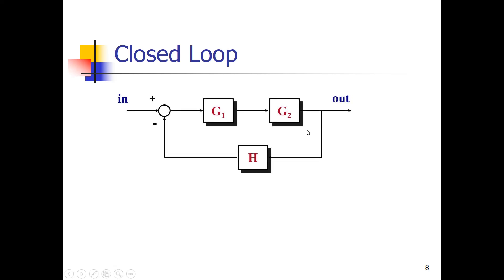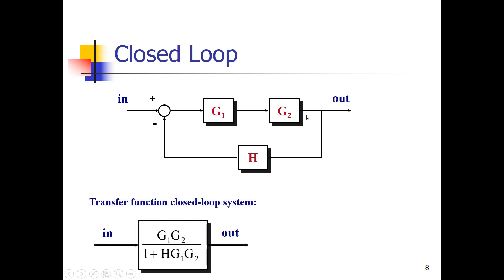Suppose we have this system. The output divided by the input — which we called Y over X in the previous slide — is everything in the forward branch, G1 times G2, divided by 1 plus everything in the loop: 1 plus G1 times G2 times H. So one plus H times G1 times G2. We can replace a complete feedback system by a new system block with this mathematical transfer function expression.